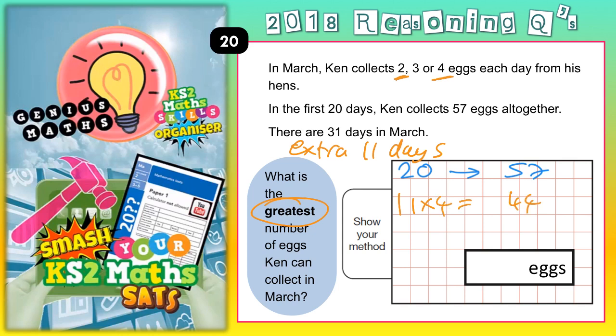Remember, he can't get any more than 4 eggs on any one day. So in the first 20 days he's got 57 eggs, and in the final 11 days the most he possibly can get is 44. All we need to do is 57 add 44.